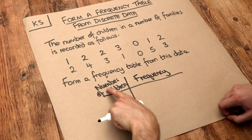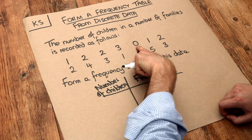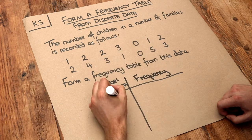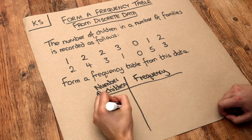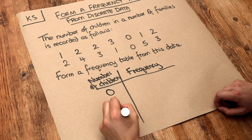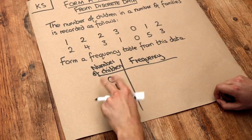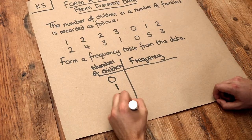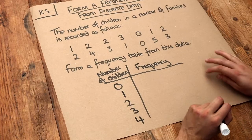So how many different numbers of children can we have in each family? Well, some families have zero children, then we could have one child or two children or three children. And there's also a four — there are no families with five children in this particular list.